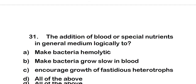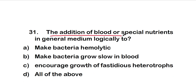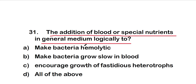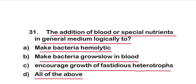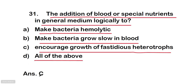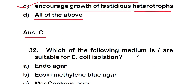Question 31: blood or special nutrients are added to a medium because of — option C — to encourage growth of fastidious heterotrophs. The addition of blood or special nutrients in a medium is to encourage the growth of fastidious heterotrophs that require enriched nutritional conditions.